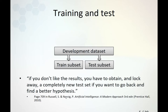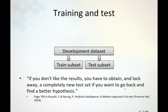The same is written in multiple machine learning textbooks. Russell and Norvig write the same and comment that if you don't like the results you got on the test, you have to obtain and lock away a completely new test set if you want to go back and find a better hypothesis. So if you've used it once, you basically have to find a new one if you are not satisfied.